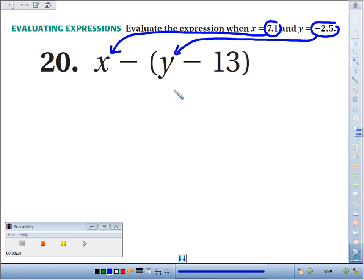This is a good opportunity to remind you it's not a bad idea when you're substituting to put the values in parentheses. So x, I've got 7.1 minus y, which is negative 2.5, minus 13.